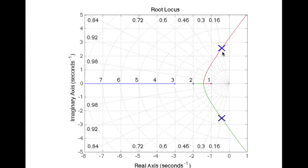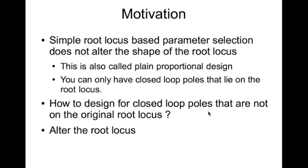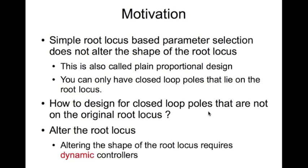But what if you want your closed-loop poles to be at a different location that does not lie on the original root locus? No matter what value of k you choose, you will never reach those closed-loop poles. The way to solve this is to alter the root locus, and you do that by using dynamic controllers.